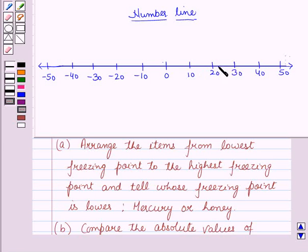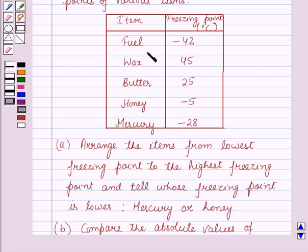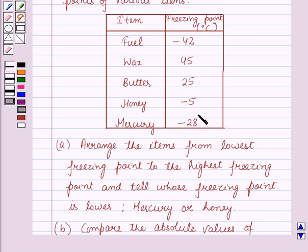Since the values are large, we take points at a distance of 10 units. Positive numbers are on the right side of 0 and negative numbers are on the left side of 0. So we have the points minus 150, minus 30, minus 20, minus 10, 0, 10, 20, 30, 40, and 50. We will plot the given freezing points — that is, minus 42, 45, 25, minus 5, and minus 28 — on the number line.